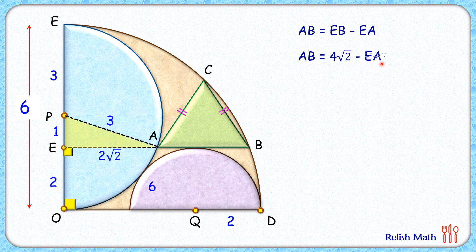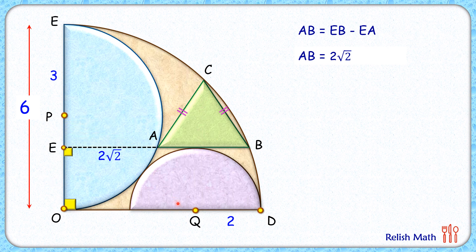So EA is two root two centimeters. Solving: AB equals four root two minus two root two, which is two root two centimeters. So we have got the base length as two root two centimeters. What is left is to find the height of the triangle, so let's remove all the construction and work again.